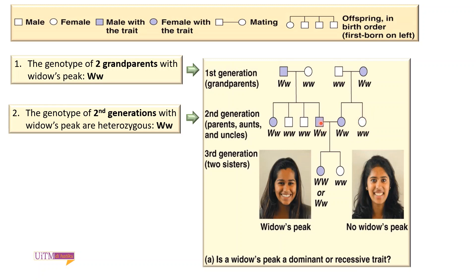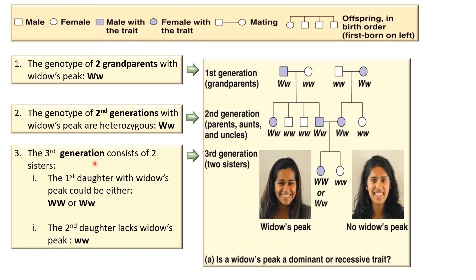The youngest son of the first grandparent couple is married to the eldest daughter of the second grandparent couple. These two individuals are the parents for the third generation, which consists of two daughters. The first daughter with widow's peak could be either homozygous dominant or heterozygous. The second daughter lacks widow's peak and has a homozygous recessive genotype. Therefore, for the inheritance of a dominant trait, the trait can only be expressed if the genotype of an individual is either homozygous dominant or heterozygous.